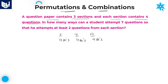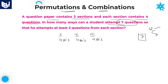The question asks: in how many ways can a student attempt 7 questions? There are total 12 questions and the student can attempt only 7. Without any condition, if you want to select 7 questions out of 12, the answer is simply 12C7, since selection is a combination. But here, one condition is given.